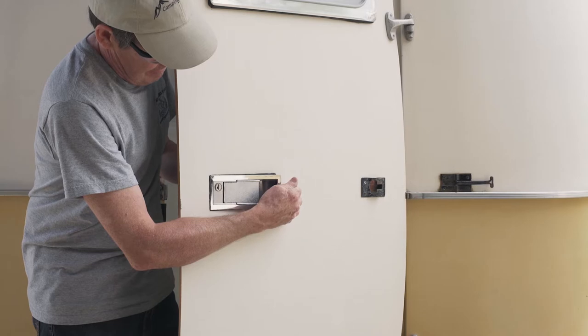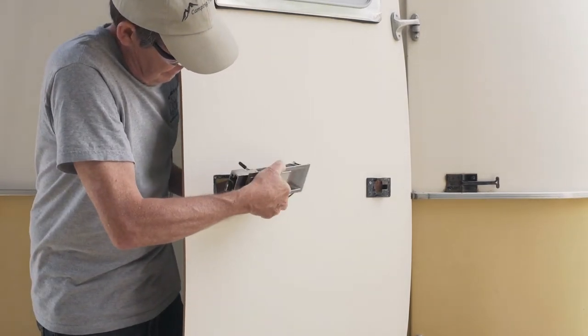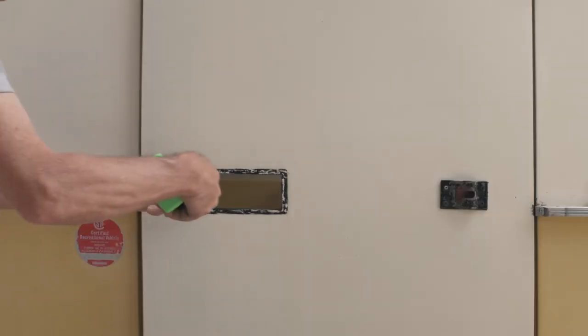Gently push the lock assembly from the inside. It may take some effort because there will be butyl tape sealing the lock to the door.